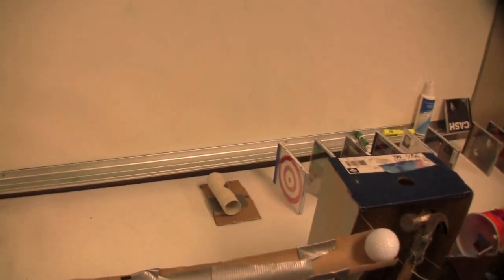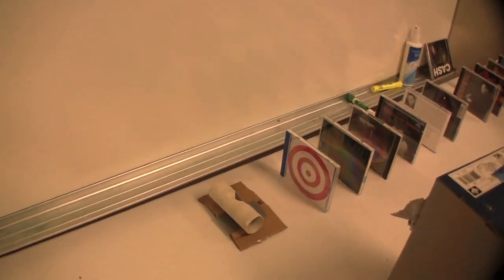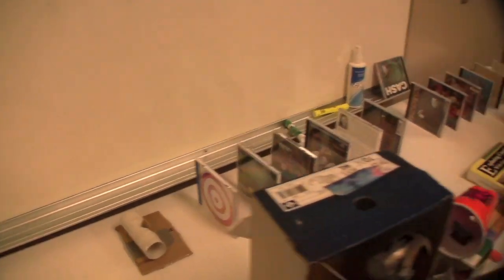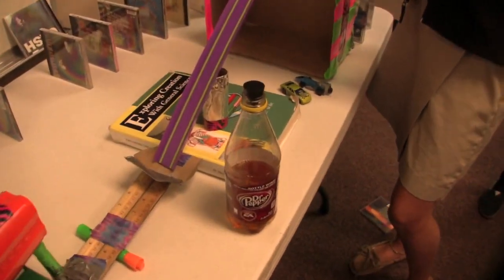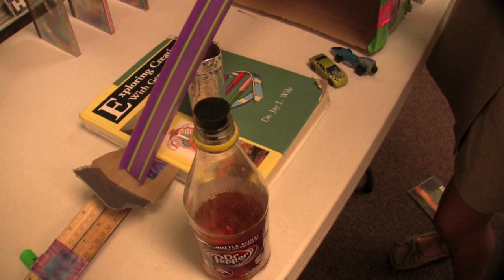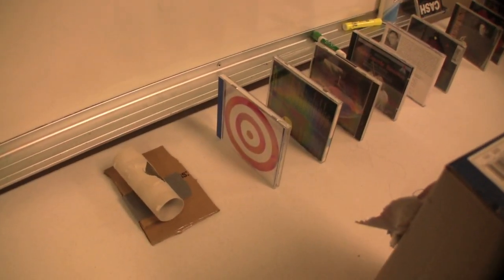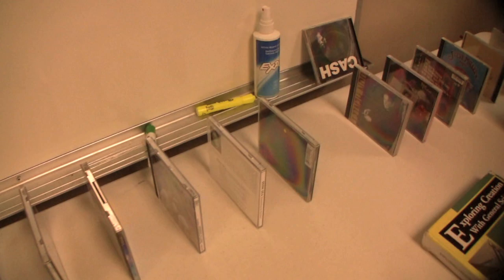So this is the 7th grade Trinity Christian School General Science Rube Goldberg Project. And what happens with this is that this rubber stopper pops off of this bottle, hits this target, knocks down all of these CDs.